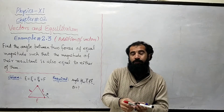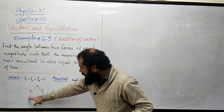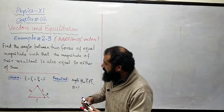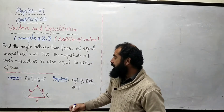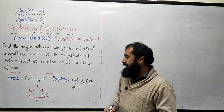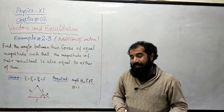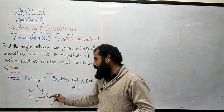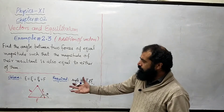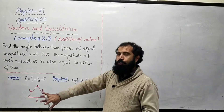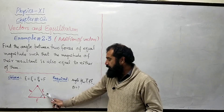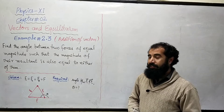Lekin agar ek vector ka head ho aur doosre ka tail ho, to woh angle hum angle ke darmiyan wala angle nahi maante. Yahaan pe aap dekhein: F1 vector idhar hai aur F2 vector udhar hai — ek vector ka head hai, doosre ka tail hai. Kuch students galti yeh kar lete hain ke under wala angle — jo equilateral triangle ke case mein 60 degree hota hai — usi ko F1 aur F2 ke darmiyan ka angle maan lete hain. Jabke F1 aur F2 ke darmiyan ka angle 120 degree banta hai, jo graphically equilateral triangle draw karne se immediately pata chal jata hai.